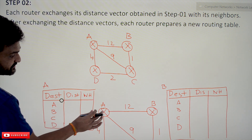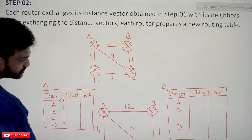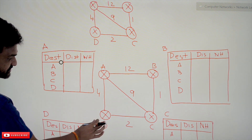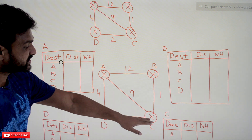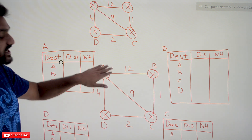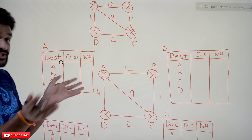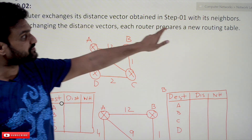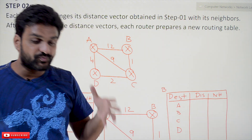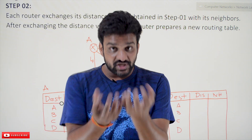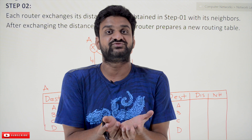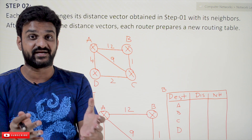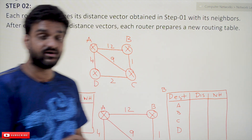The distance vector of A will be exchanged to B, C, and D. Similarly, the distance vector of B will be exchanged to A and C. The distance vector of D will be exchanged to C and A. The distance vector of C will be exchanged to B, D, and A. After exchanging the distance vectors, each router prepares a new routing table based upon the distance vectors it receives, and the new routing table will get updated.